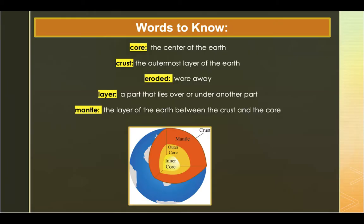An example of crust: the workers drilled a few inches into the earth's crust. Our next word is eroded, or wore away. An example: wind and sand eroded the writing on the sphinx. Our next word, layer, is a part that lies over or under another part. An example: the baker added a thin layer of chocolate to the cake. And our last word, mantle, is the layer of the earth between the crust and the core. An example: the mantle is the layer beneath the earth's crust.